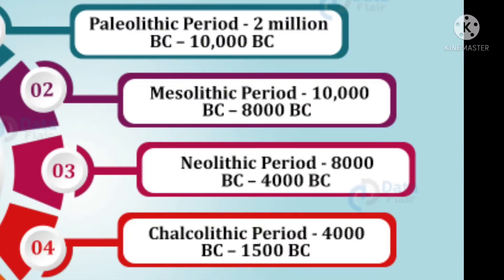The four periods of the Stone Age are: Paleolithic or Old Stone Age, Neolithic or New Stone Age, Mesolithic or Middle Stone Age, and Chalcolithic or Copper Stone Age.